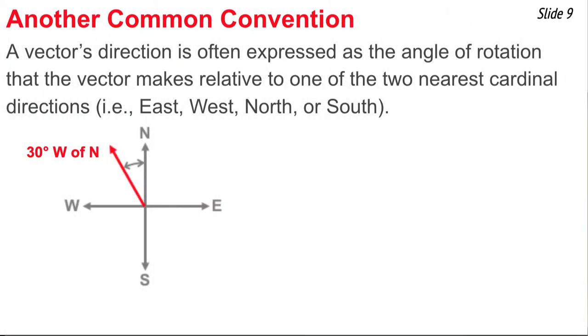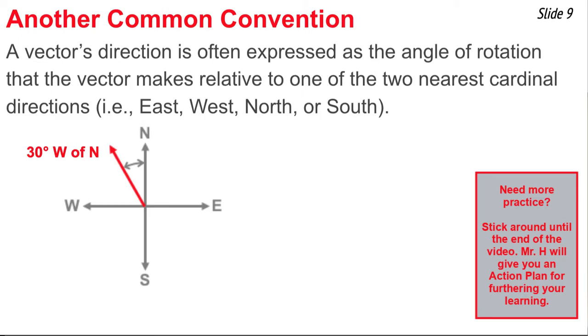The counterclockwise from east convention is not the only convention for measuring the direction of vectors. Another convention involves expressing the direction of a vector as the angle of rotation that that vector makes relative to one of the two nearest cardinal positions.